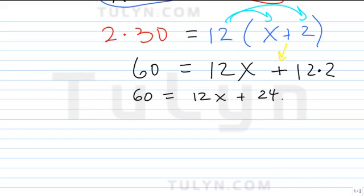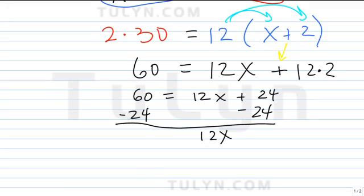I'm going to undo the addition of 24. So, undoing addition, I know, subtraction. Bring down the 12x, right? And, what's 60 minus 24? 36, right?